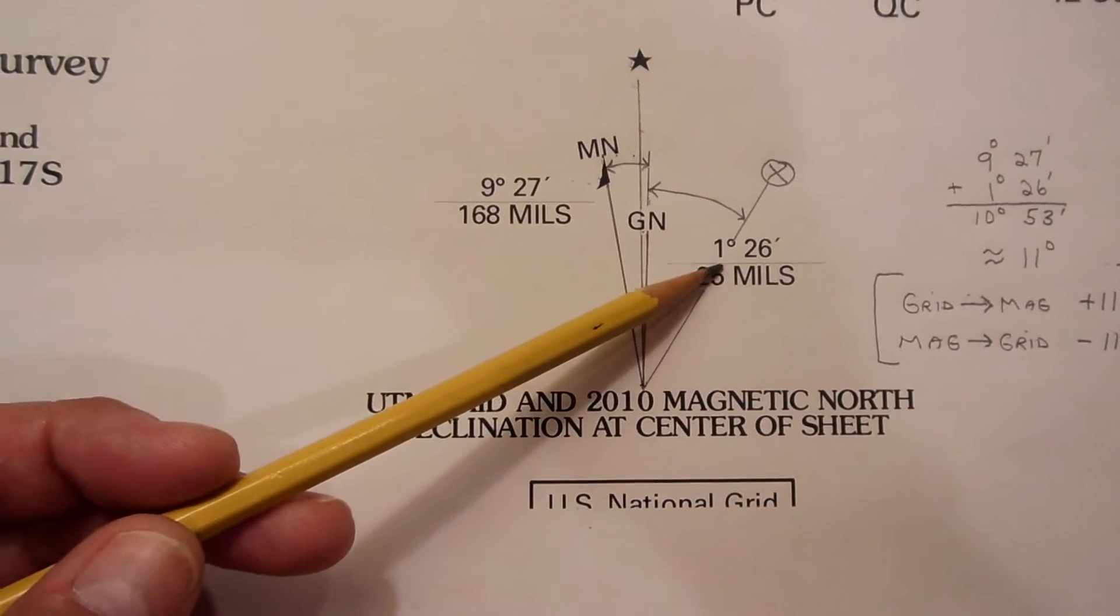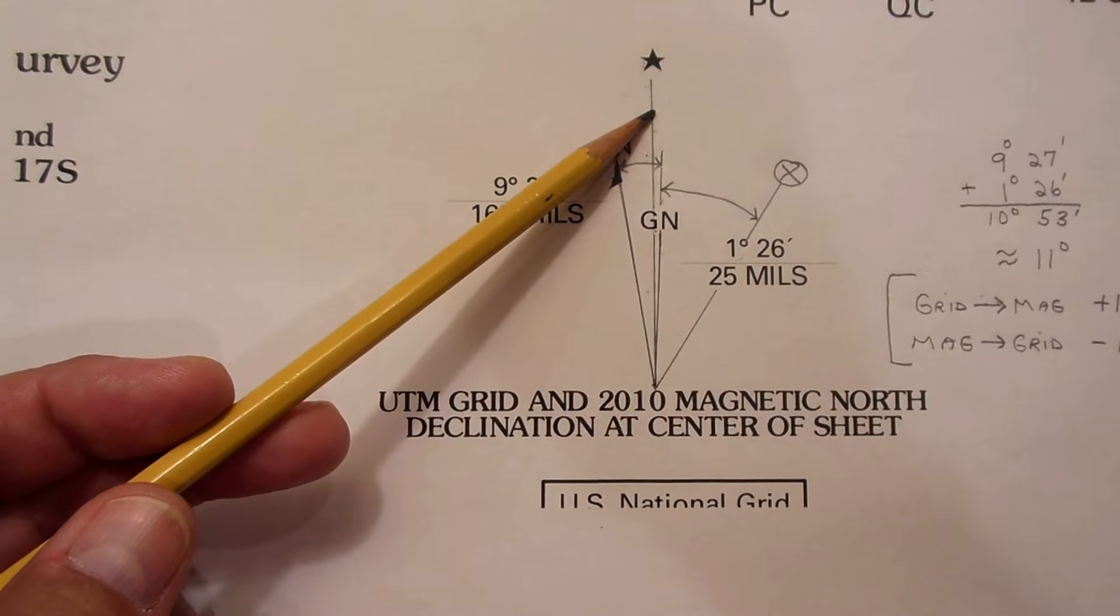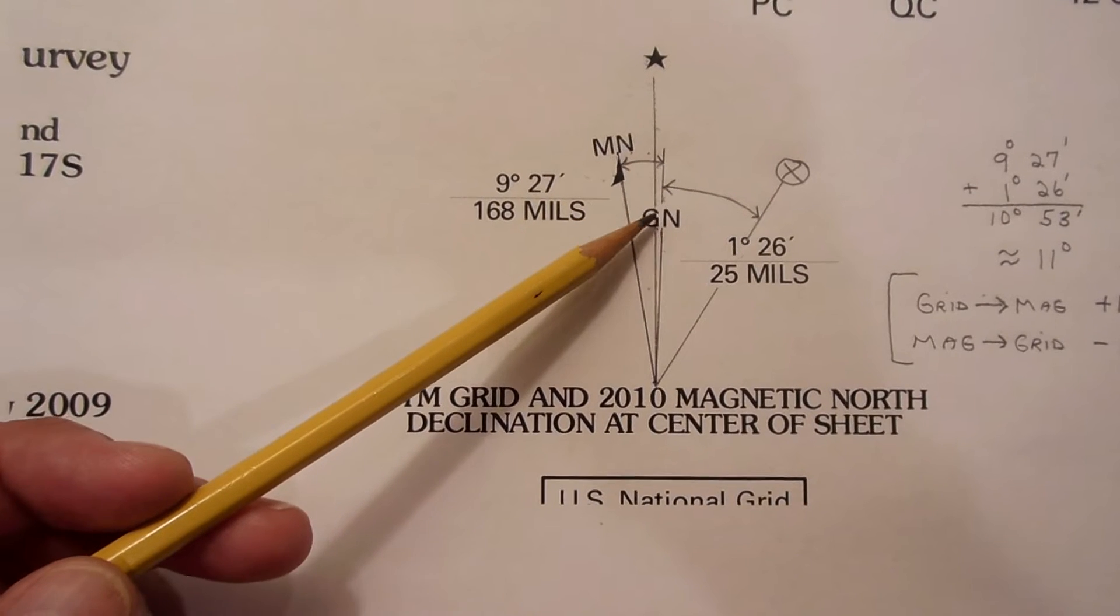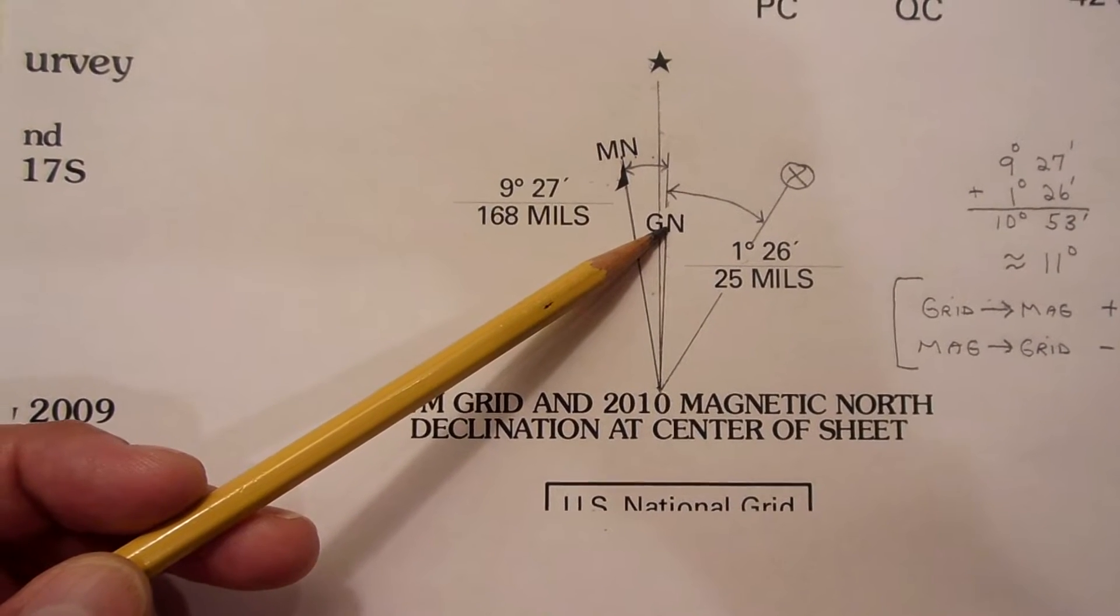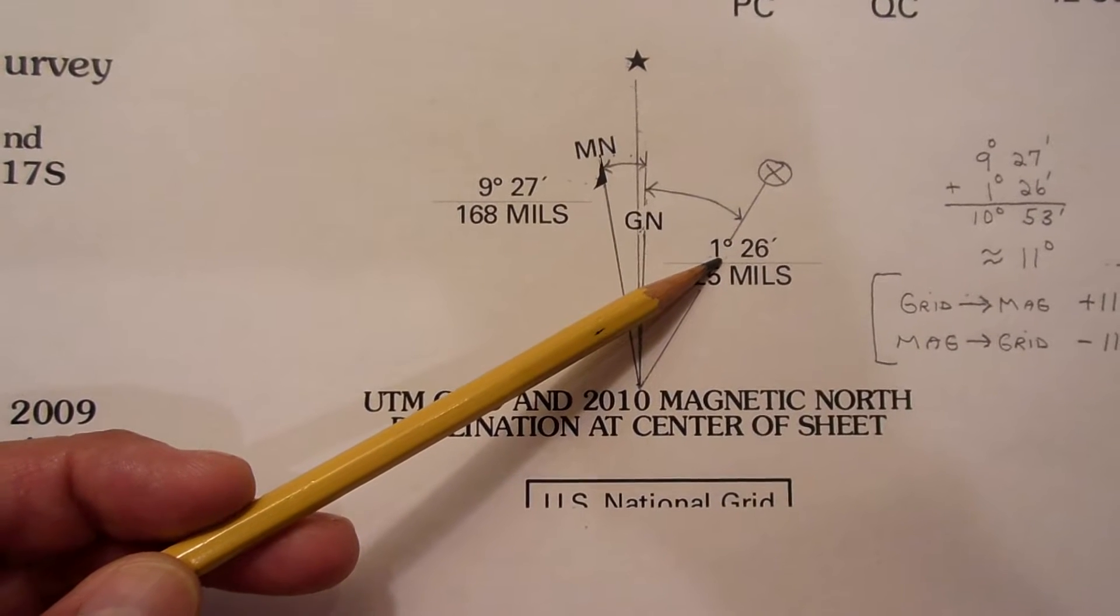And what this is telling you is, or looking at it another way, let's say this is true north, which is perfectly vertical on the maps. Grid north in this map is to the east by 1 degree and 26 minutes.